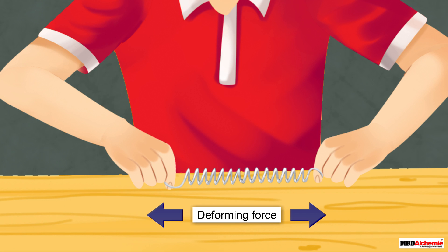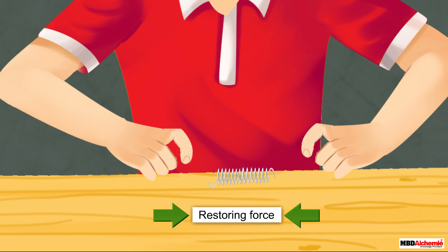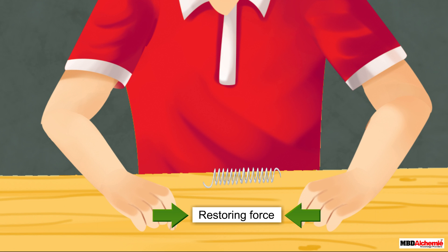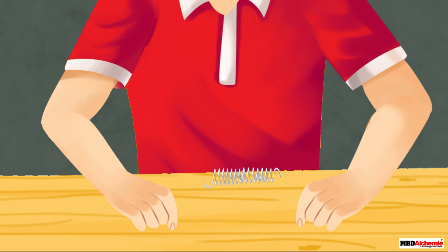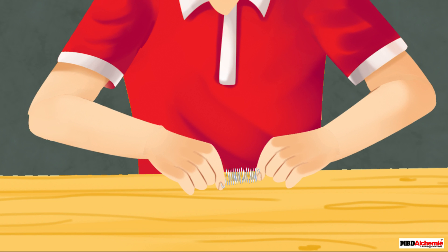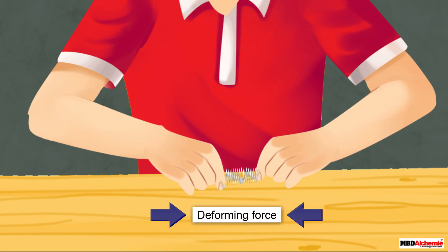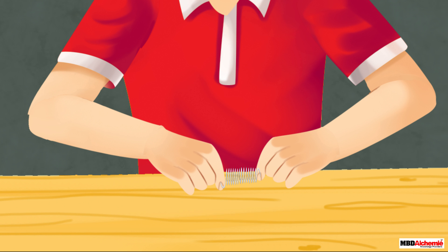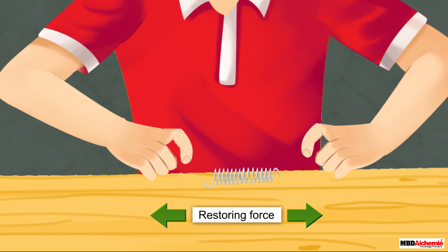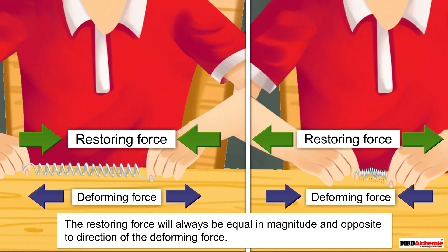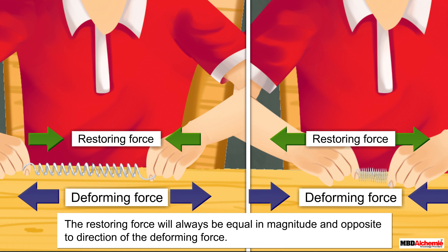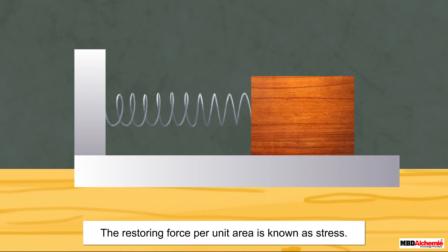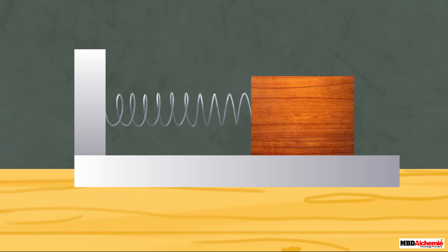When we are stretching the spring, the deforming force acts in the outward direction and the restoring force acts in the opposite, inward direction. Similarly, when we compress the spring, the deforming force acts inward and the restoring force acts outward. The restoring force will always be equal in magnitude and opposite to the direction of the deforming force.